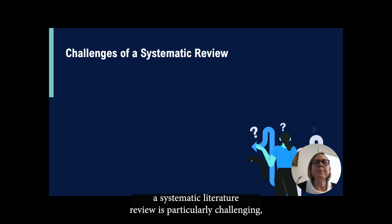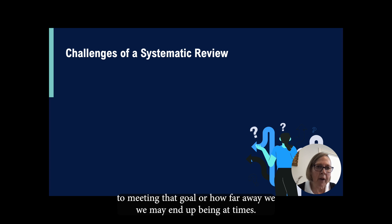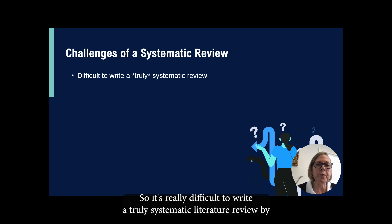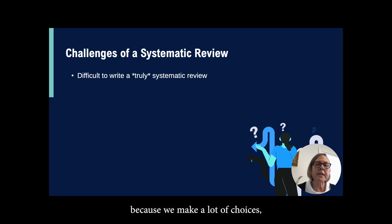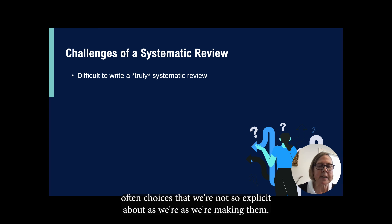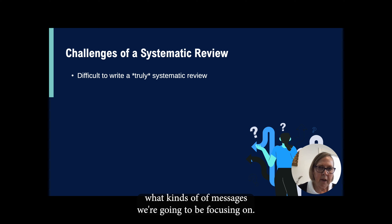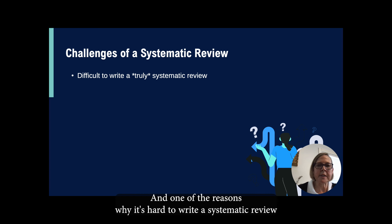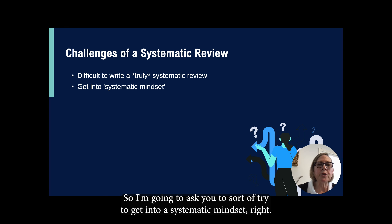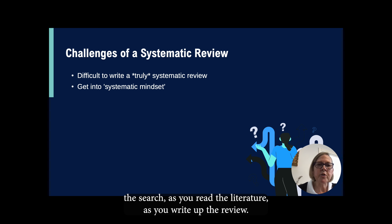Doing a systematic literature review is particularly challenging. It's a goal we want to strive for and to recognize how close we get to meeting it. It's really difficult to write a truly systematic literature review — one that could be replicated fairly easily by another person — because we make a lot of choices, often implicitly, as we do the review. We're making choices about what keywords to use, what kinds of literature to look at, what messages to focus on. I'm going to ask you to try to get into a systematic mindset, really explicitly thinking about the decisions you make as you do the search, as you read the literature, as you write up the review.